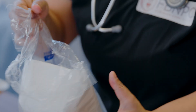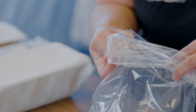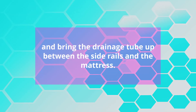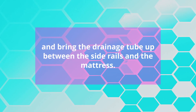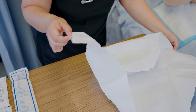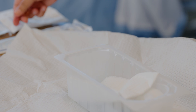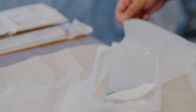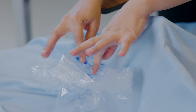Open the package containing the drainage system. Place the drainage bag over the edge of the bottom bed frame and bring the drainage tube up between the side rails and mattress. Open the catheterization kit according to the directions, keeping the bottom of the container sterile. Place the plastic bag that contained the kit within reach of the work area to use as a receptacle for used supplies.